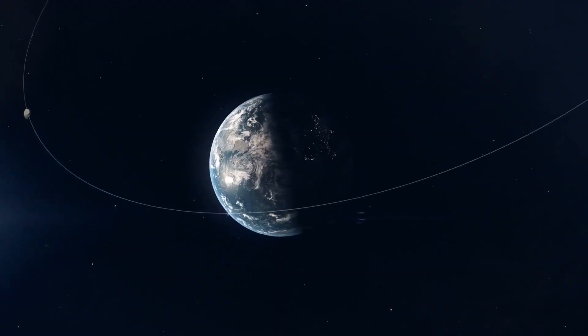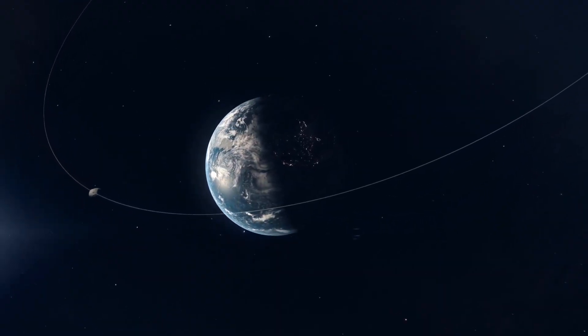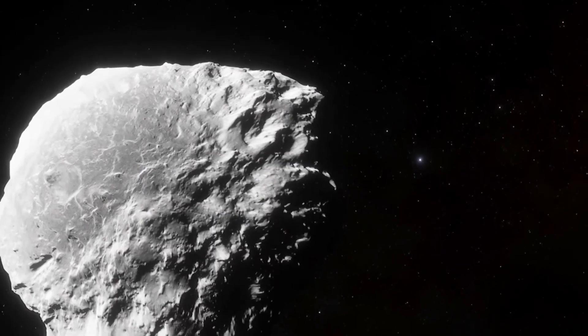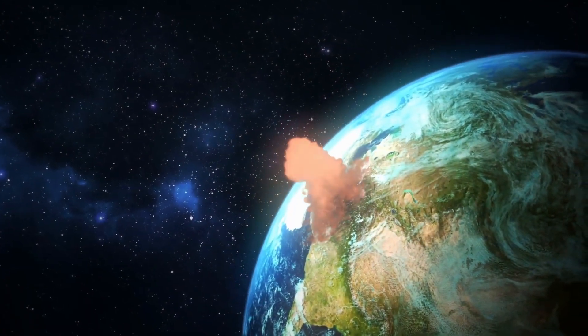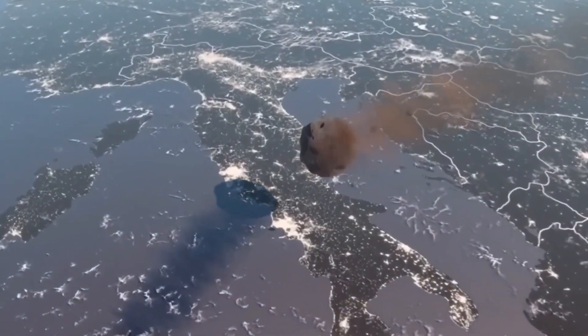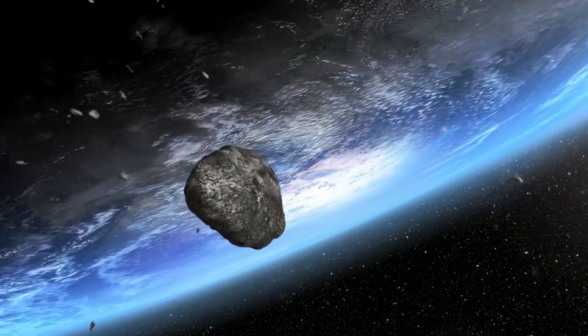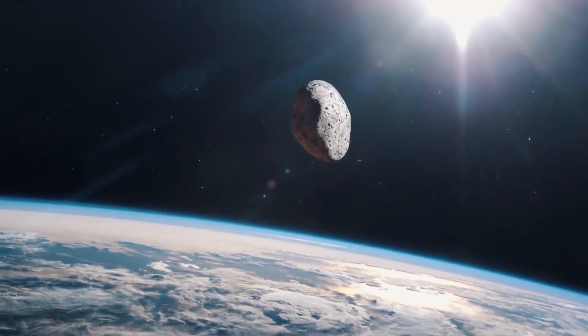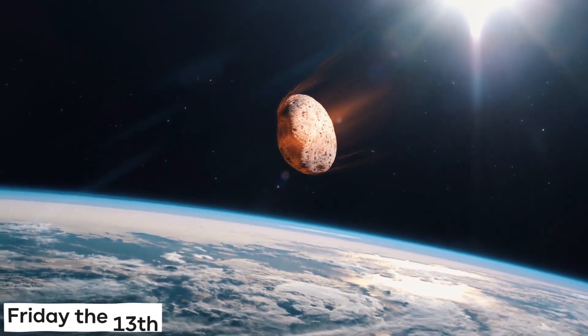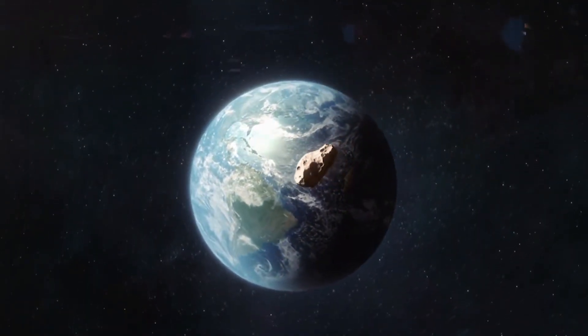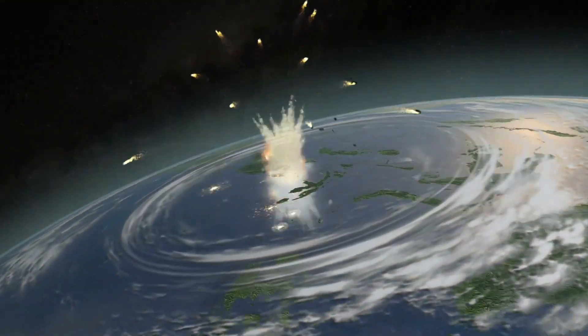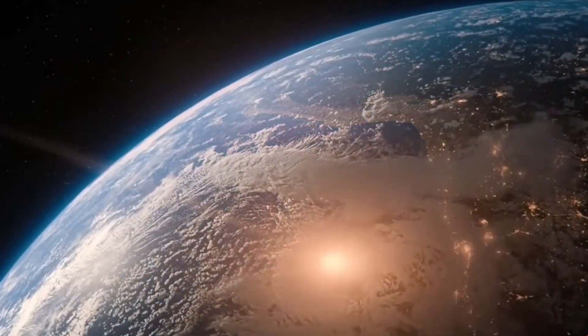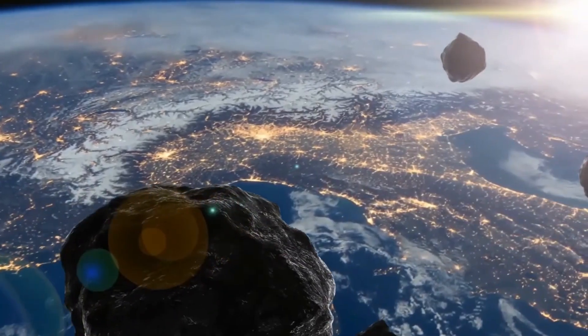Everyone knows how much trouble the Tunguska meteorite has caused. And its size, according to scientists, was only 75 meters. If a block with a diameter of 400 meters collapses to the ground, the consequences can be many times more severe. The fall of a celestial body of this size will release 500 megatons of energy. For comparison, the Tunguska meteorite caused an explosion of about 40 megatons. The energy of the explosion of the thermonuclear bomb AN-602, known as the Tsar Bomb, was 57 megatons in TNT equivalent. The explosion of the bomb over Hiroshima was equal to 18 kilotons.